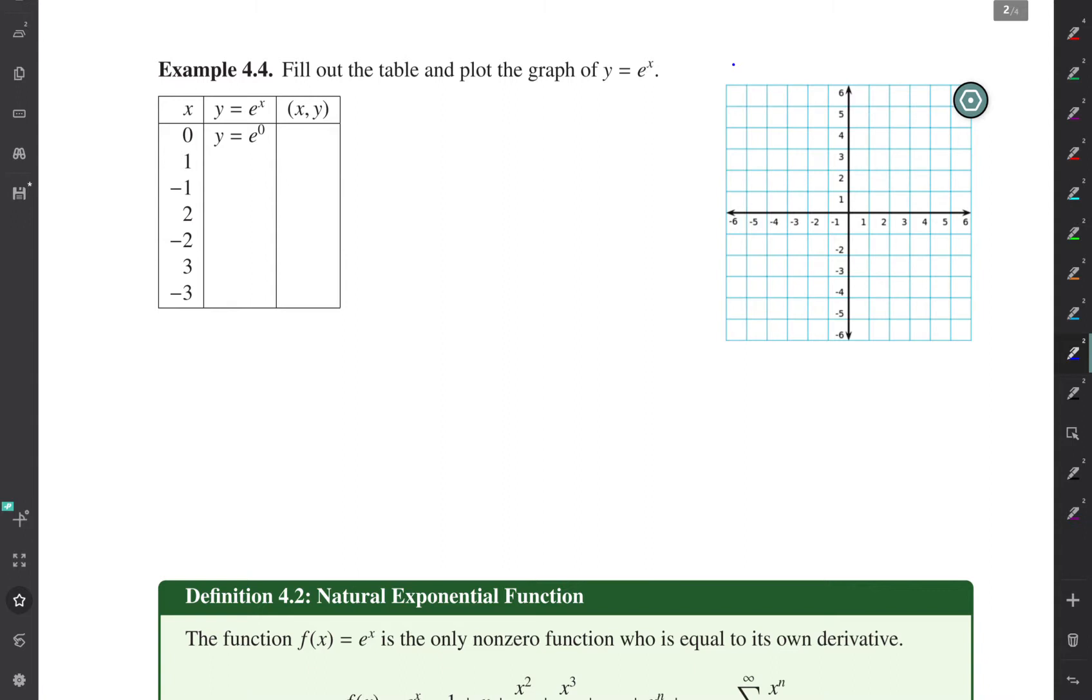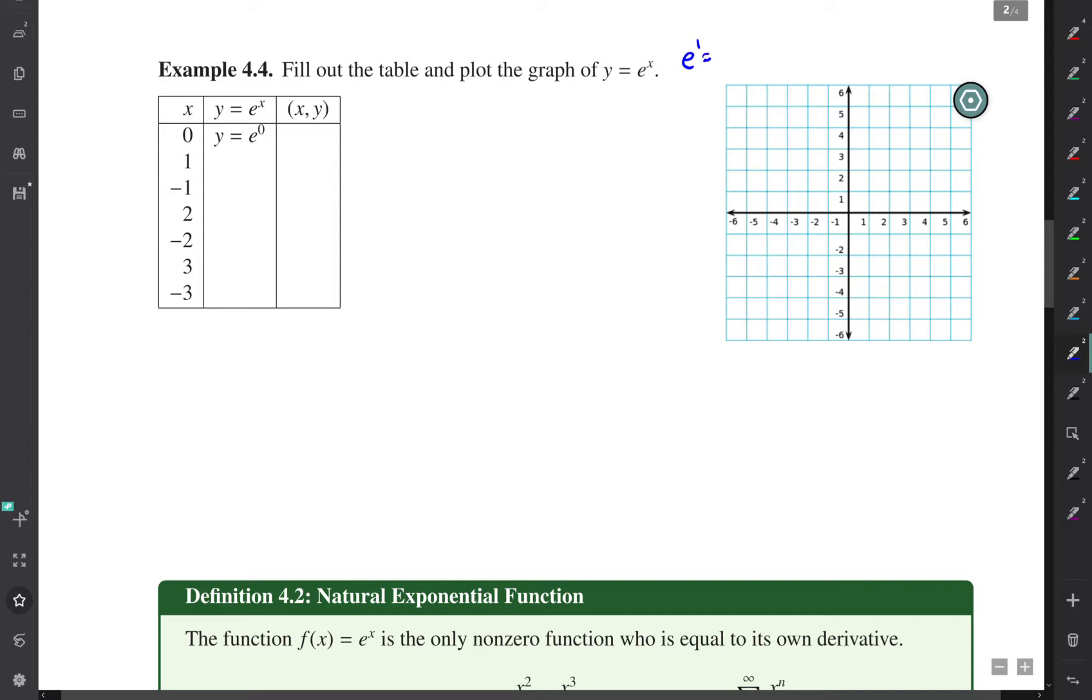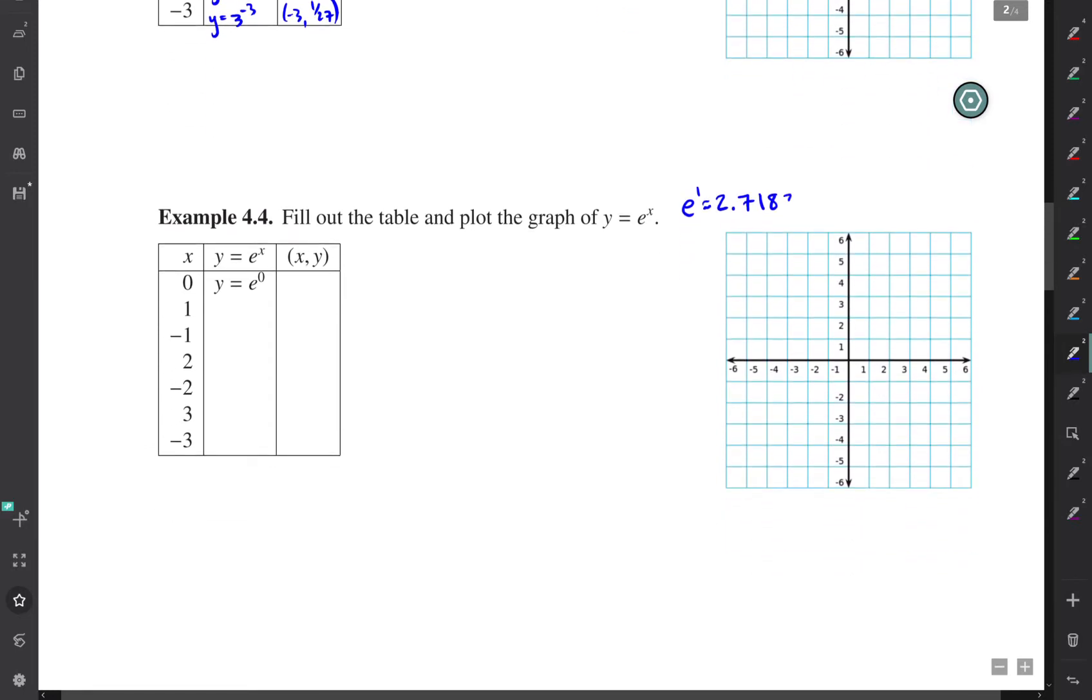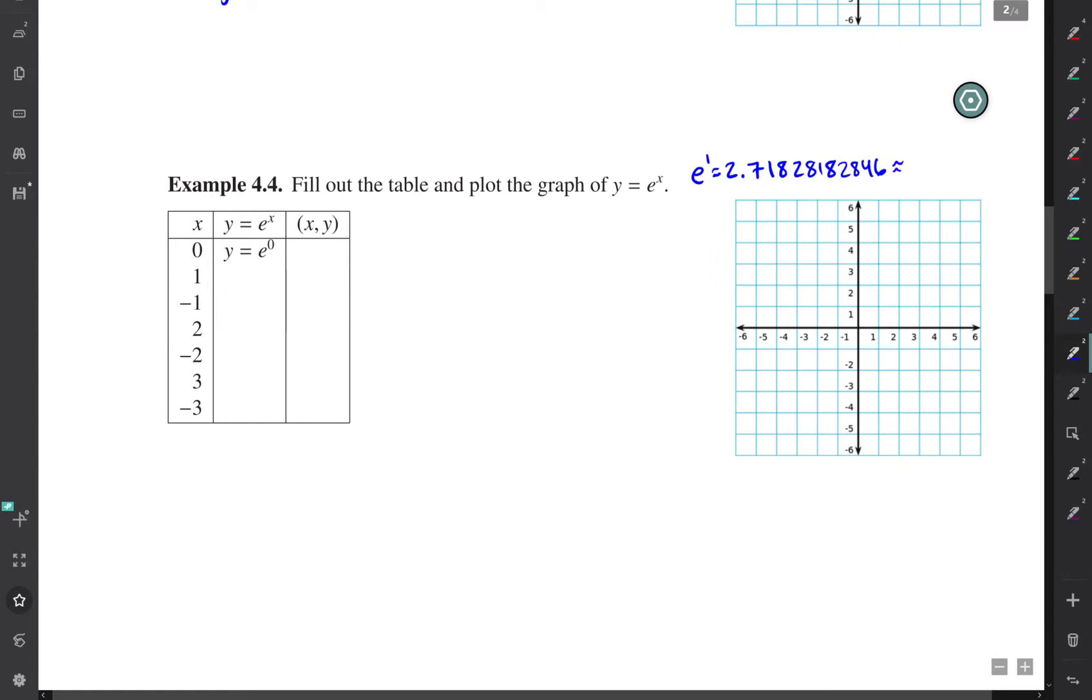In the last example of this section, we're asked to fill out the table and plot the graph of y equals e to the x. You should remember that the number e is approximately equal to 2.7182846, or if you just want to round to the first two decimal places, it would be about 2.72.